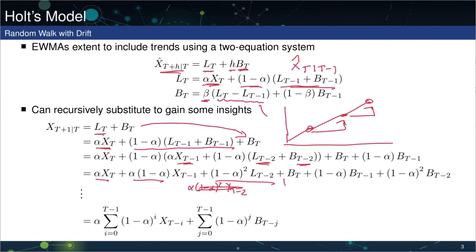Then we have a second term that depends only on the b terms: B_T, (1-alpha)*B_T, (1-alpha)²*B_T — a decaying series. So the level depends on the exponentially weighted moving average of X, but the actual forecast also depends on the exponentially weighted moving average of B_{T-j}. We have two exponential smoothers, not just one as in simple exponential smoothing, which adds flexibility to handle a slowly evolving or nearly constant trend.